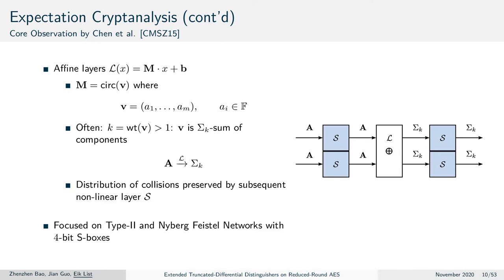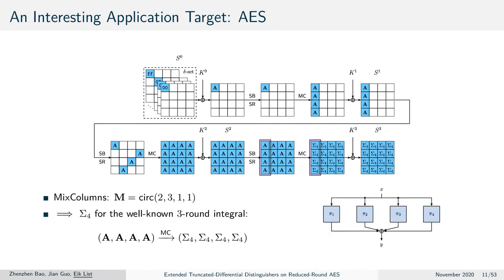This means if we have components that are summed in the linear layer and iterate over all values, one could potentially approximate this by the sum of independent permutations. The distribution of the number of collisions will then be preserved by the subsequent non-linear layer, simply because equal inputs to the non-linear layer will produce equal outputs. Their context was a little different from ours, since Janet et al. focused on type-2 and Nyberg type-5 cell networks with 4-bit S-boxes. Our target was the well-known integral distinguisher on 3-round AES.